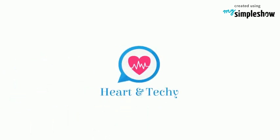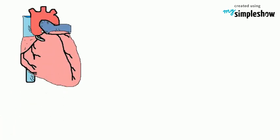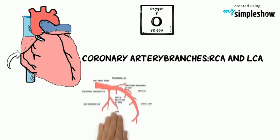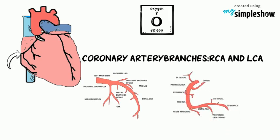Coronary artery anatomy, part 1: anatomy of the right coronary artery. Coronary arteries are the arteries of coronary circulation, which provide oxygen to the heart muscles. The coronary arteries wrap around the entire heart. The two main branches are the left coronary artery and right coronary artery, both of which give off several branches. Right and left coronary arteries originate from the right and left sinus of Valsalva of the aortic root.